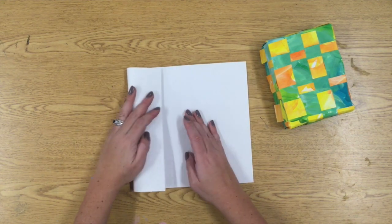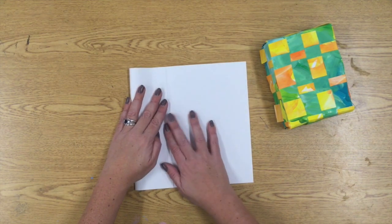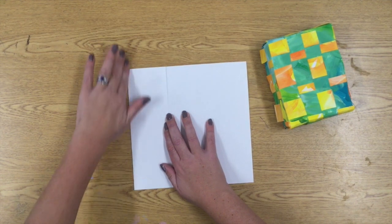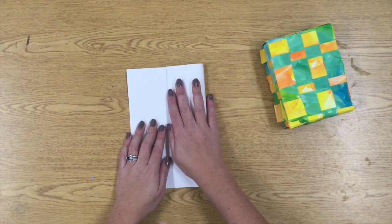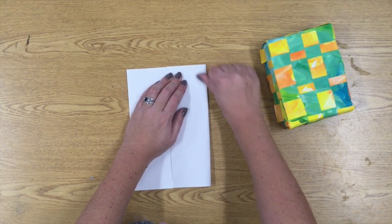Open it up and fold both sides into the middle. It's going to look like a set of double doors. You don't want the ends to overlap. You want them to meet exactly in the middle.